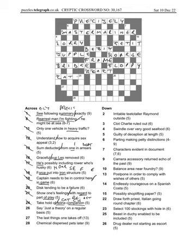Twenty-six across, say just a theory on a regular basis. This is going to mean say, and it's the regular letters of just a theory. So the U, T, T, E, and R gives us utter, for say.